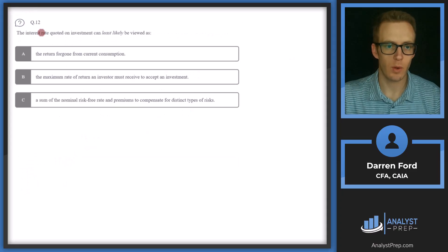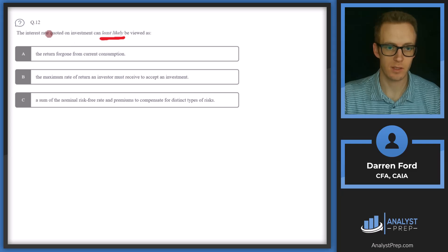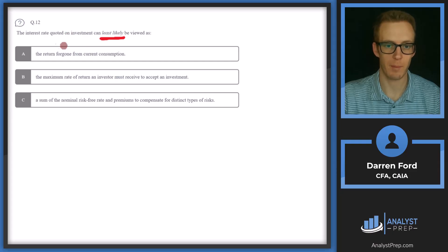Question 12: the interest rate quoted on investment can least likely be viewed as? Since we're looking at least likely, we're going to choose an answer that does not reflect the interest rate quoted on an investment. Two of these will be correct assumptions, and one will not be — and that one is what we go with.